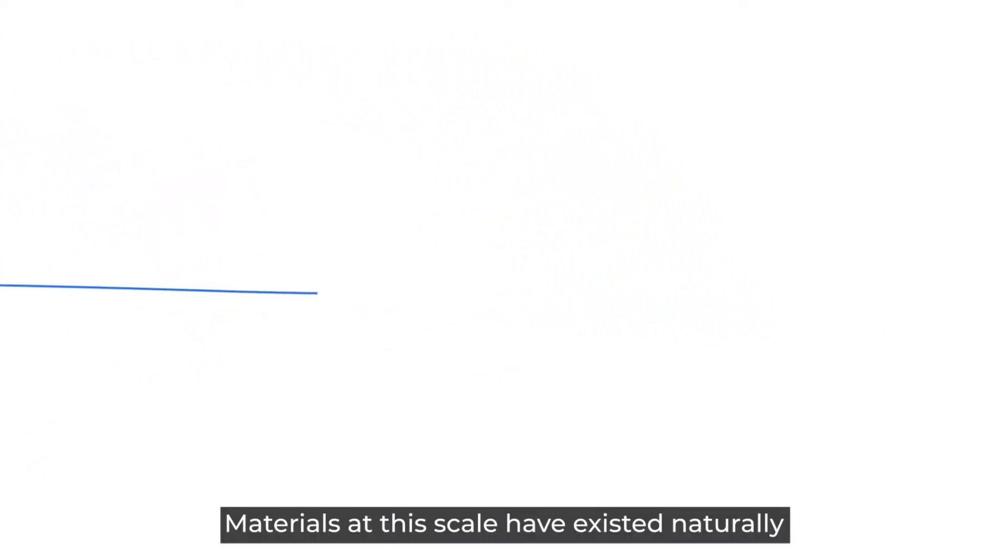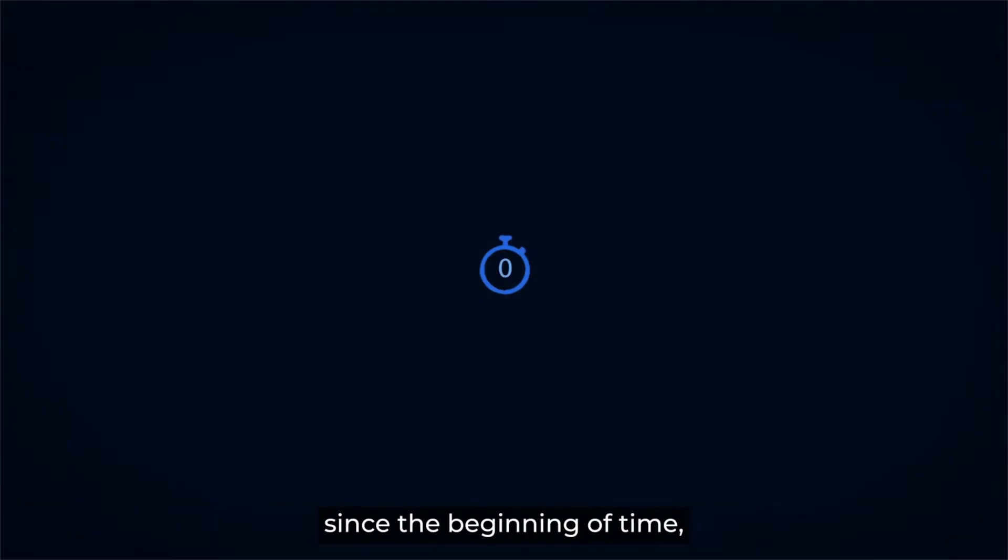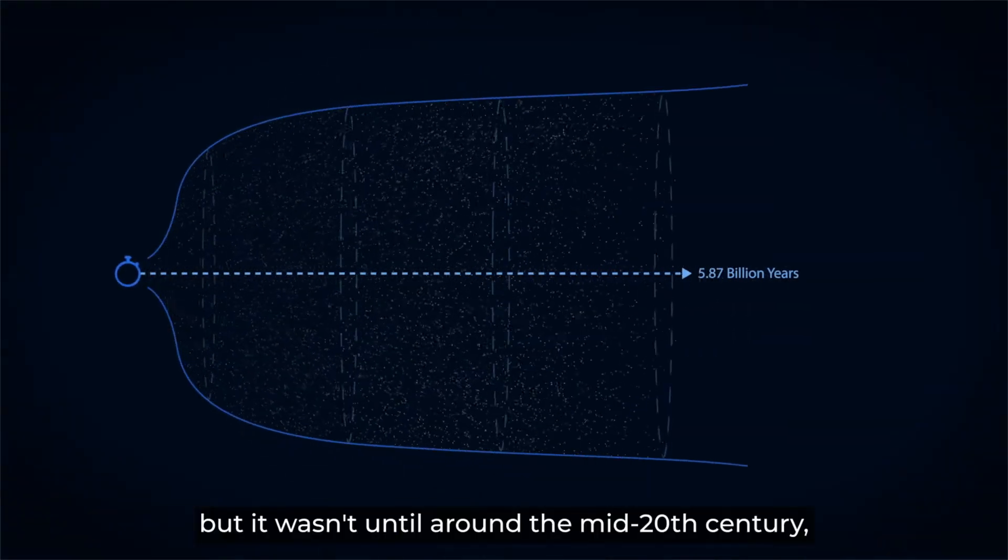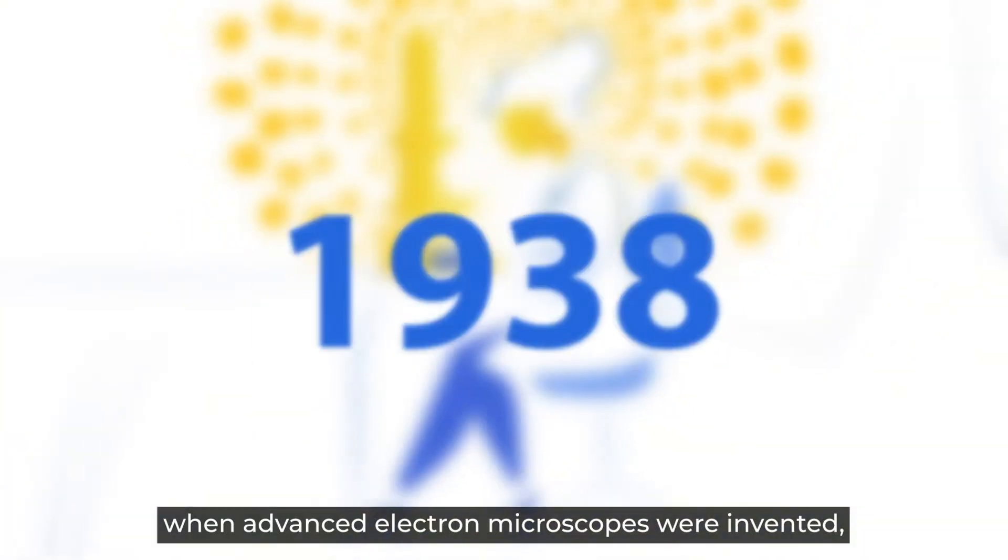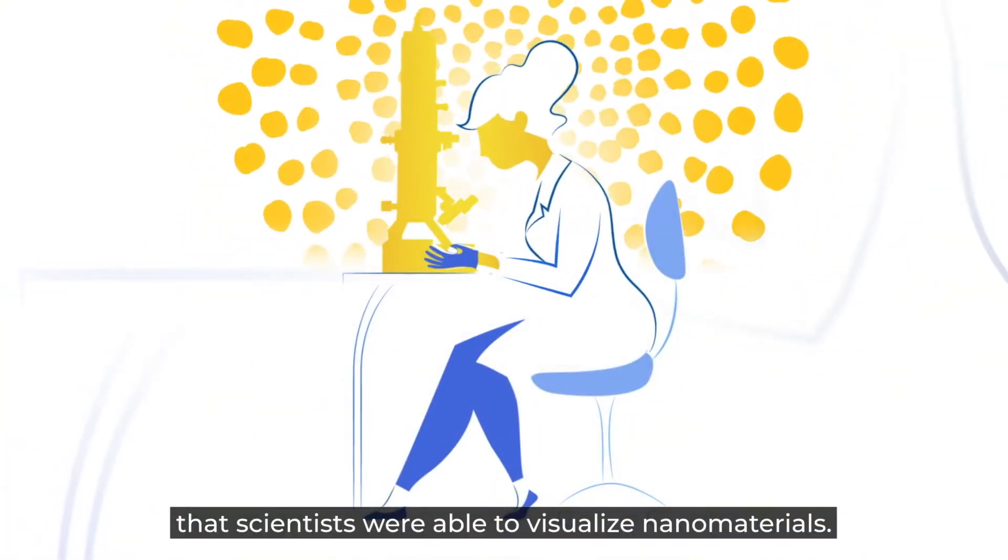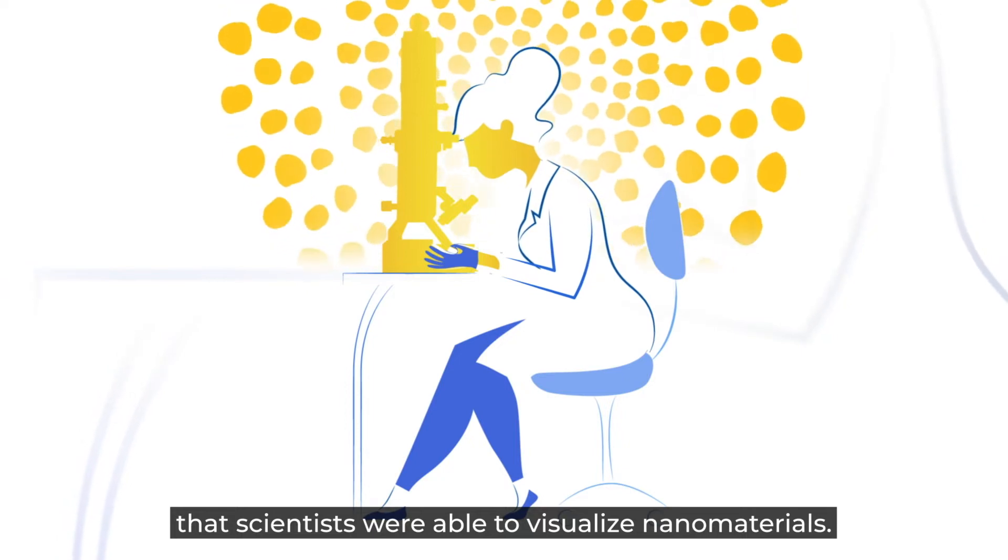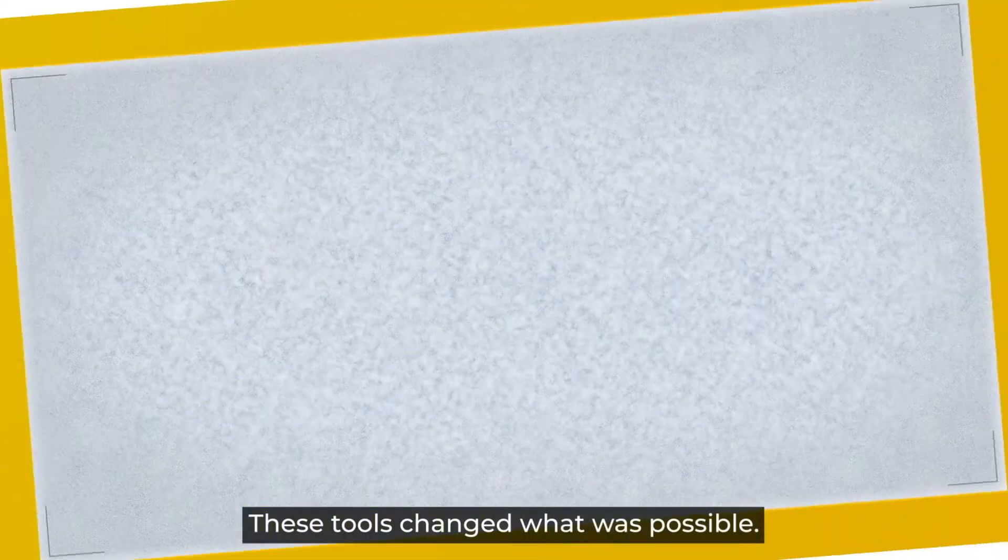Materials at this scale have existed naturally since the beginning of time. But it wasn't until around the mid-20th century, when advanced electron microscopes were invented, that scientists were able to visualize nanomaterials. These tools changed what was possible.